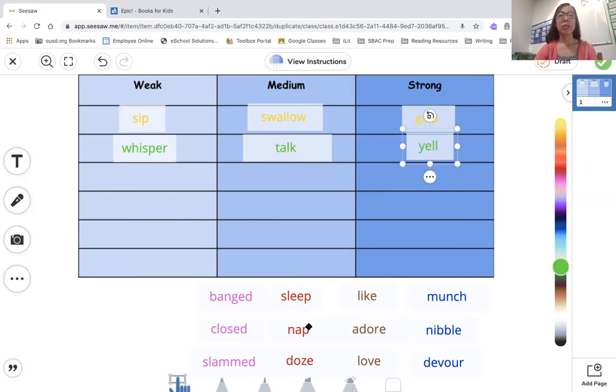Sleep, nap, and doze. Which one is the weakest? Which one are you sleeping for just a little bit? Which one's medium and which one is strong? Like, adore, love. Think about things that you like. What would you say about them? Which one is weak, medium, or strong?